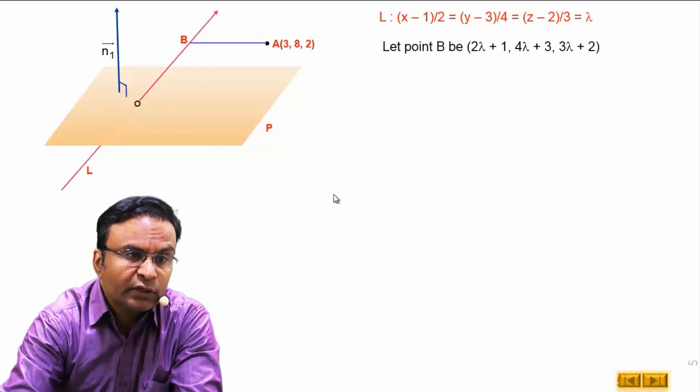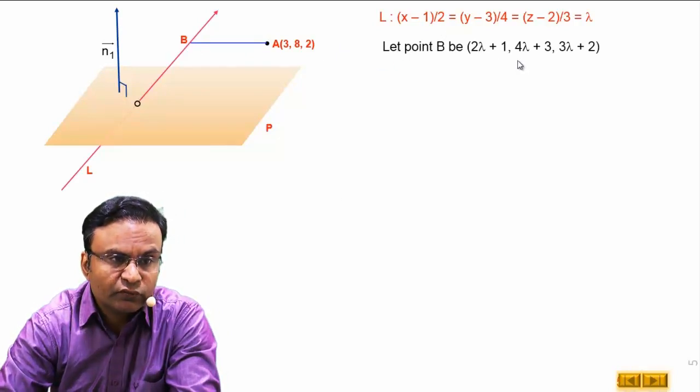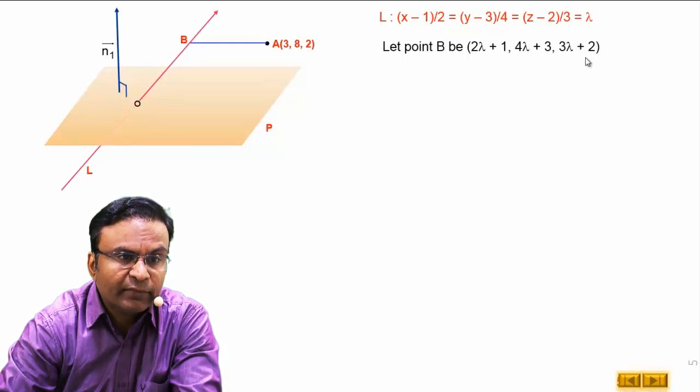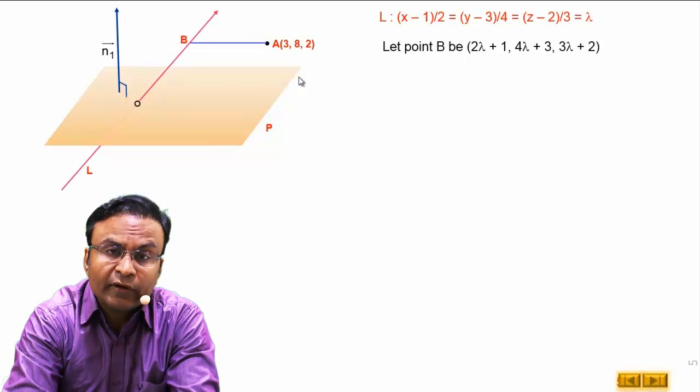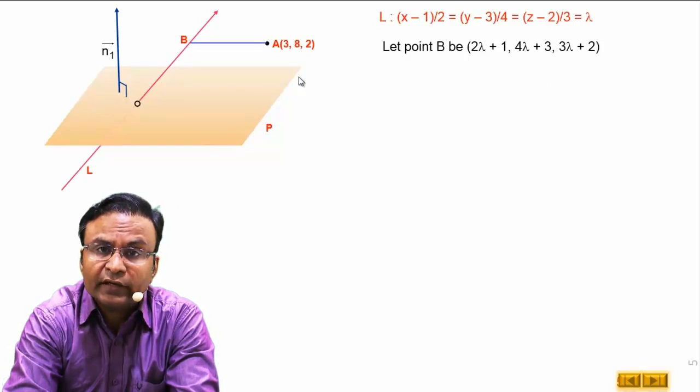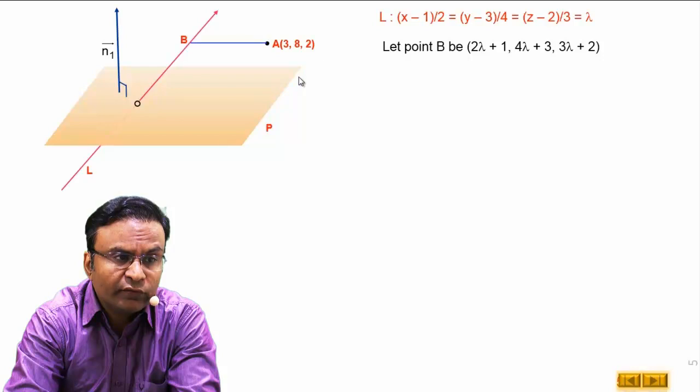Let us assign general point of this line to point B. Let point B is 2 lambda plus 1, 4 lambda plus 3 and 3 lambda plus 2. To find the point B, we will find the value of lambda. How we get value of lambda?